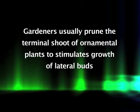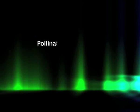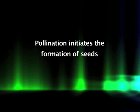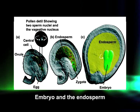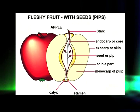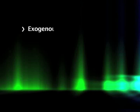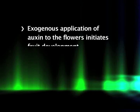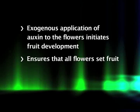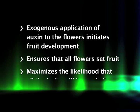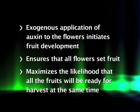Pollination of flowers in angiosperms initiates the formation of seeds. The pollen, endosperm, and embryo of a developing seed produce auxin. As seeds mature, they release auxin to the surrounding flower parts, which may serve as an initial stimulus for fruit growth. The endosperm may act as the main source of auxin during initial stages of fruit growth, and the developing embryo during later stages. Commercial growers apply auxin to flowers to initiate fruit development, ensuring all flowers set fruit and that all fruits are ready for harvest at the same time.